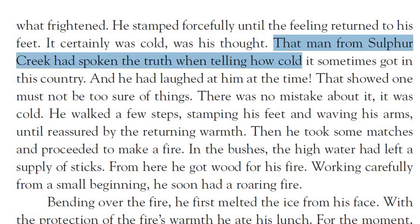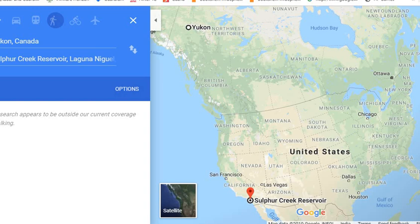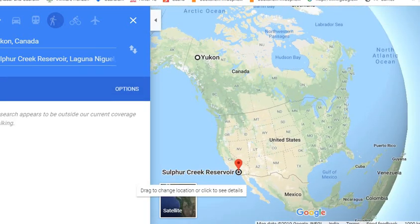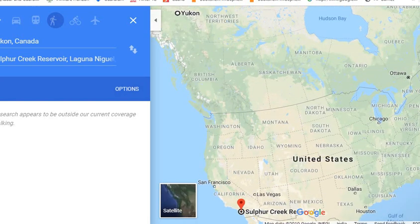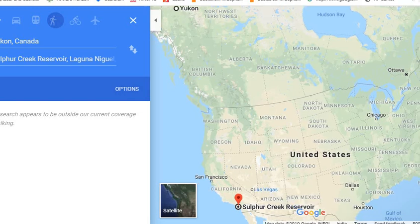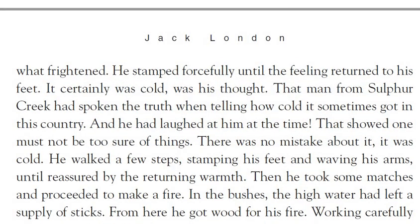He acknowledged that the man from Sulfur Creek had spoken the truth when telling how cold it sometimes got in this country. It appears this man had traveled all the way from Sulfur Creek to Yukon. There was an old man who had warned him: 'Do not go there, it is really risky.' But he didn't realize it at the time — and now he was realizing it with his feet and hands numb.